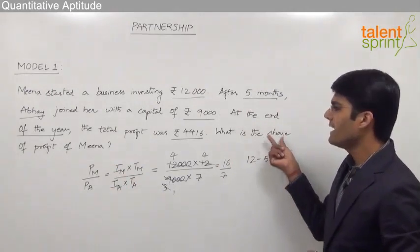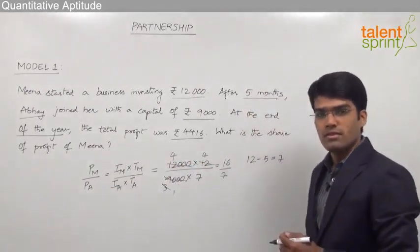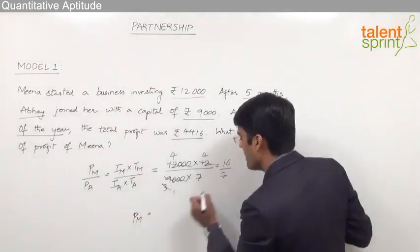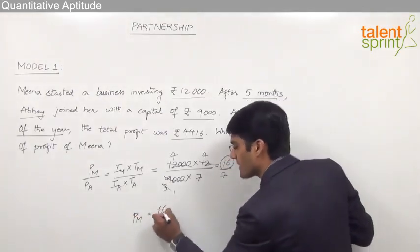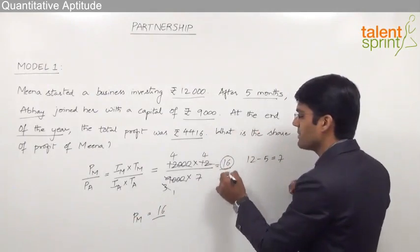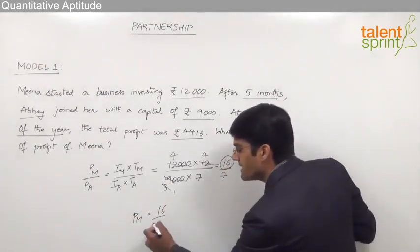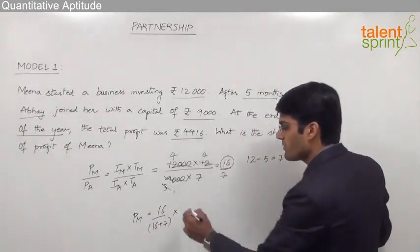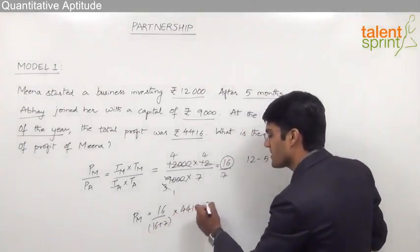We are supposed to find out the share of Meena. As already discussed from ratios we can say that profit of Meena will be 16 parts out of the total 16 plus 7. That is nothing but 23 parts. 16 plus 7, 23 parts.